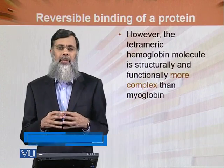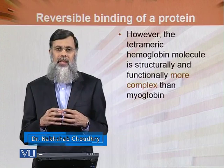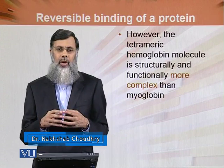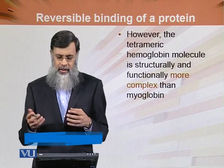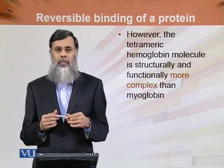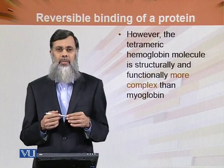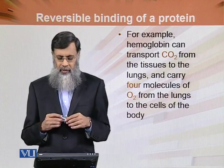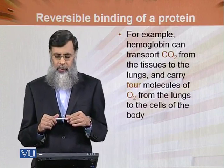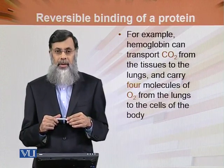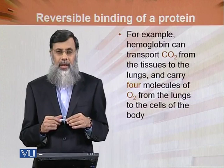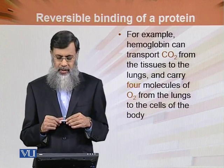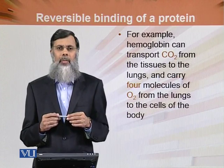Hemoglobin is composed of a tetramer. It can transport carbon dioxide from the tissues to the lungs, and carry four molecules of oxygen from the lungs to the cells of the body.